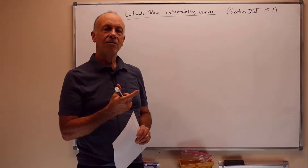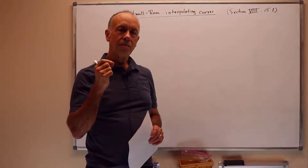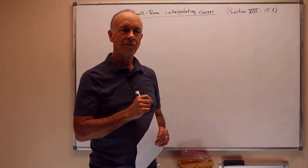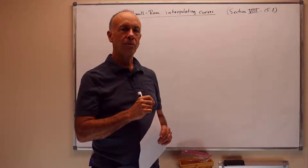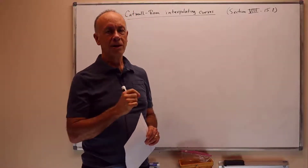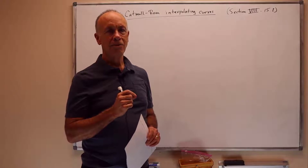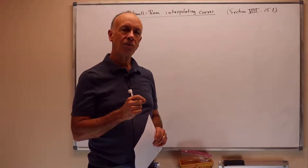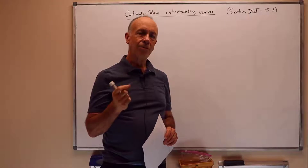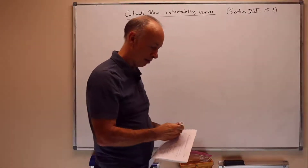A lot of times, though, it's convenient to actually specify a curve by giving points that are on the curve and require that the curve passes through those points. When this happens, we say the curve interpolates the points. This is a different meaning to the word interpolate than we used before. Before, interpolate was a kind of averaging. Now interpolate means something rather different — it means passing through the points.